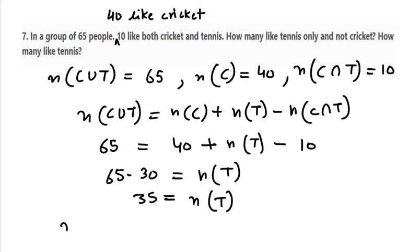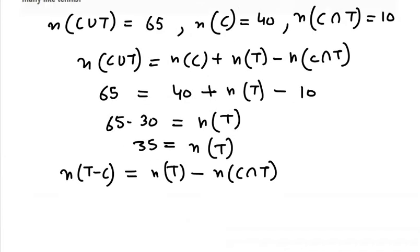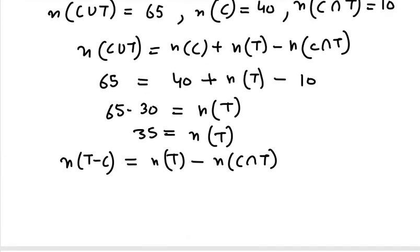So it will be N(T-C) equal to N(T) take away N(C∩T). N(T) is 35 and N(C∩T) is 10. Therefore, 25 people like tennis only and not cricket.